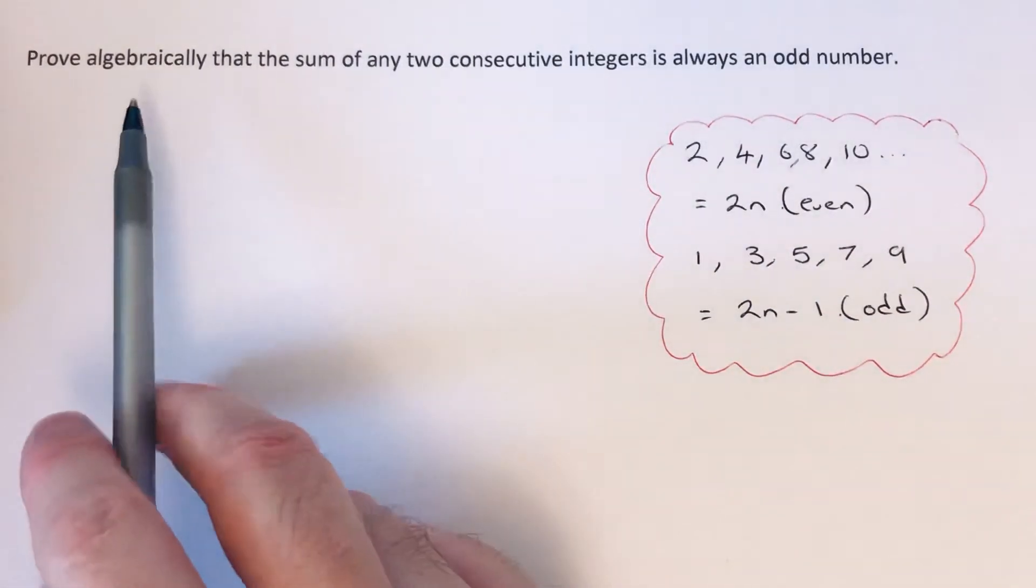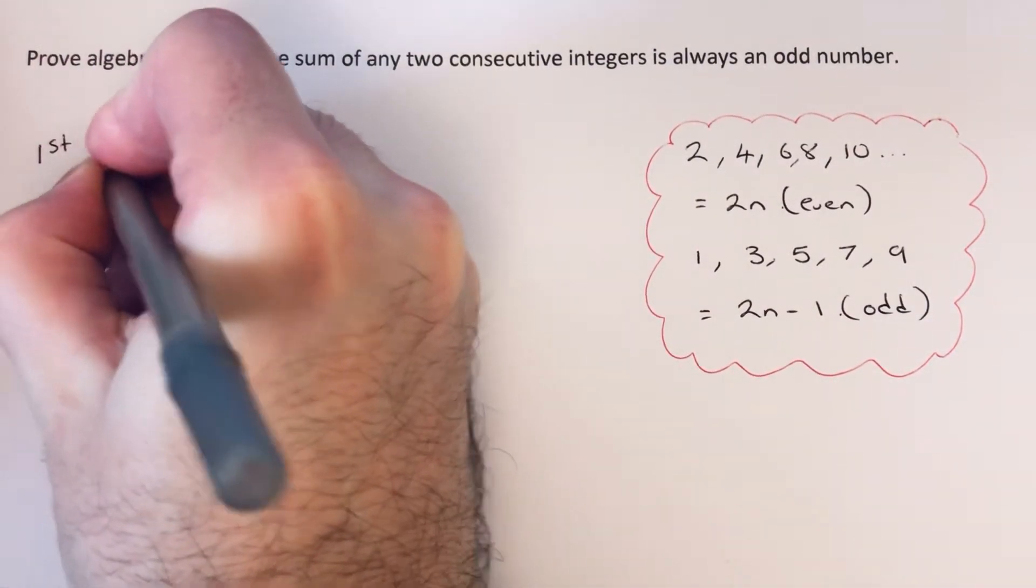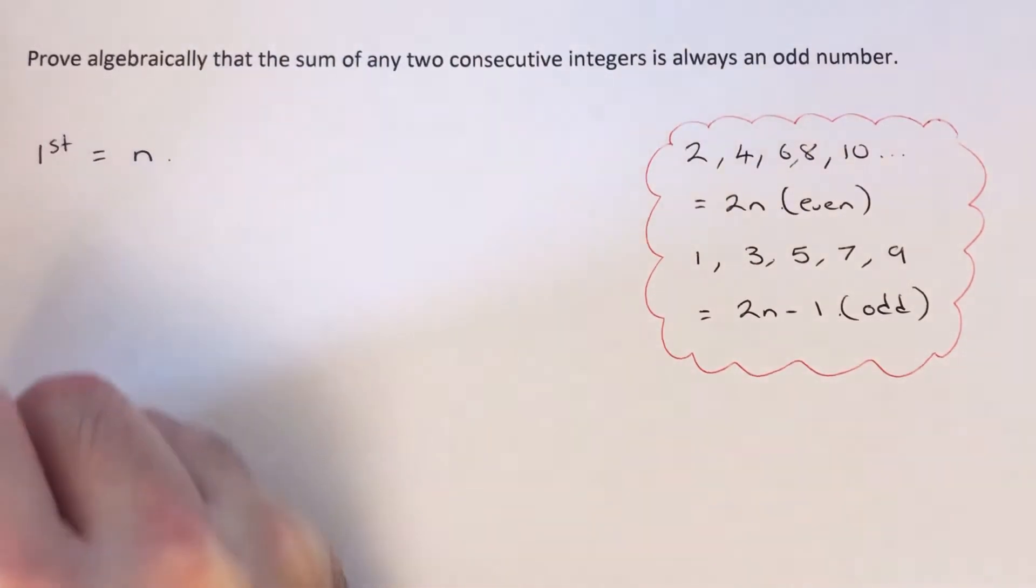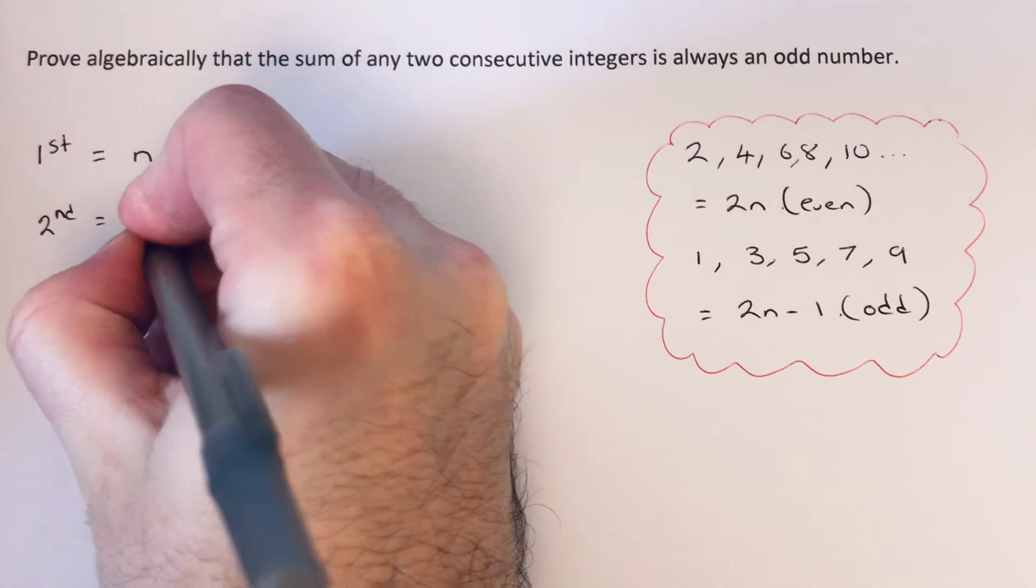Okay, so let's get on with our proof then. So let's call our first number, let's call that first number n. So the next number would be n plus 1.